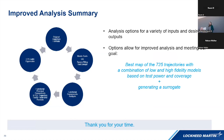To wrap up, I wanted to revisit the decoder ring graphic and reiterate that there are opportunities for improvement throughout the entire analysis process. The seven options we detailed can be used individually or in conjunction with one another depending on the specific challenge at play. In this case, they did help us approach our ultimate vision of obtaining the best map of the 725 trajectories with a combination of low- and high-fidelity models as well as generating a surrogate. Thank you for your time — I'd like to open up for questions.